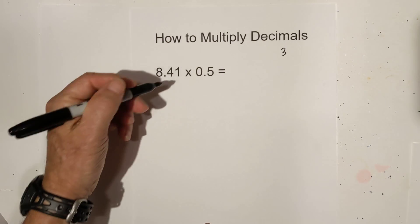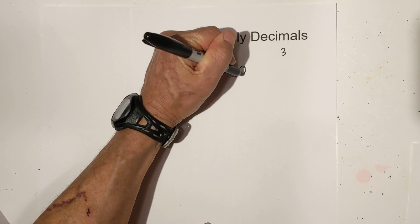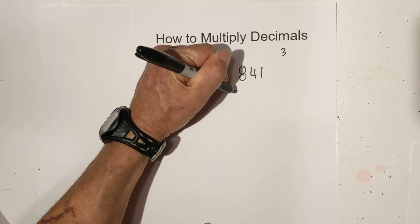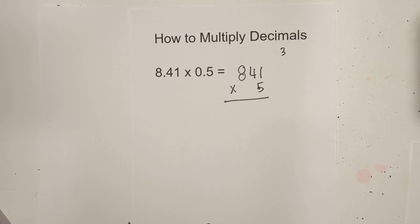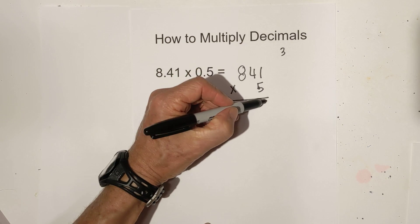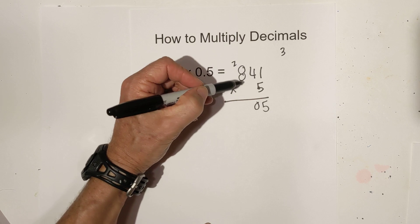Next you just multiply as if there are no decimals. So it will be 841 times 5. Okay, so that is step 2. You just multiply normally. 5 times 1 is 5, that's 20 carry the 2, that's 40 plus the 2 that's 4205.